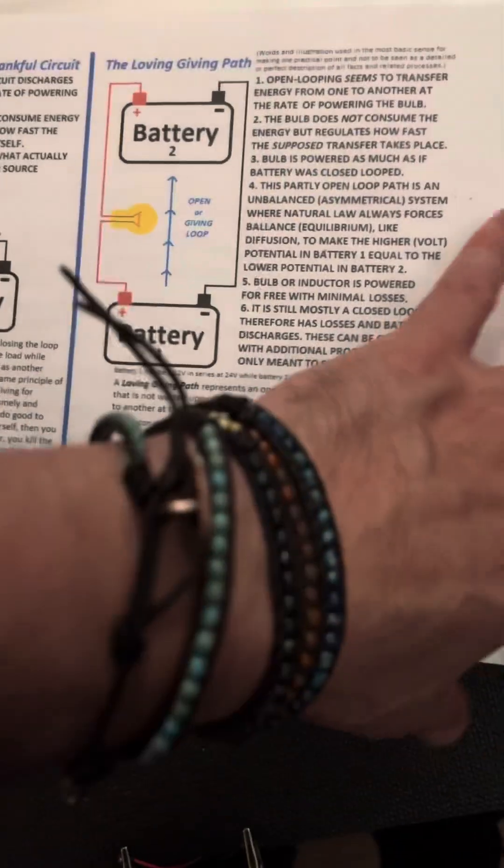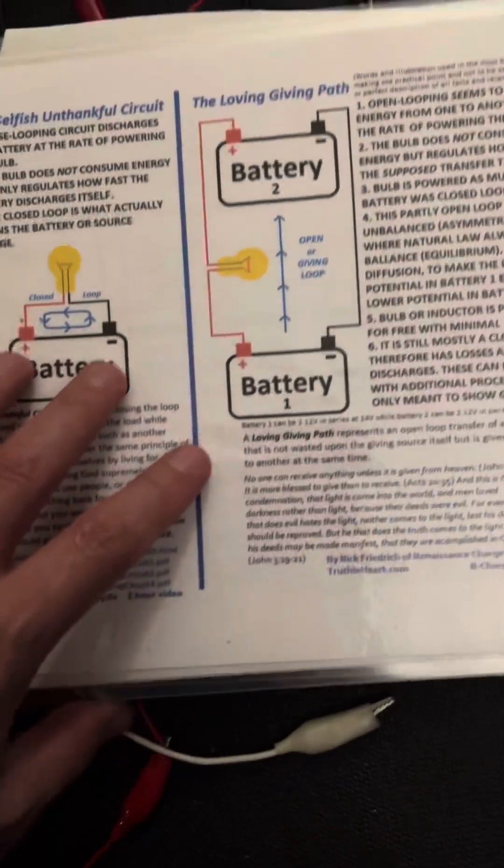Now, definitely look into these circuits here. This is the Loving Giving Path circuits. This is just how it's presented to us. And then you do what you wish with it.